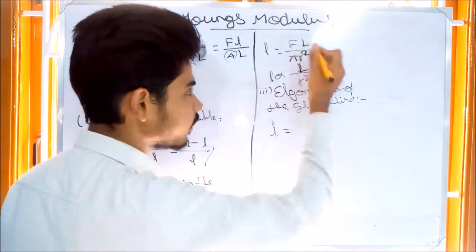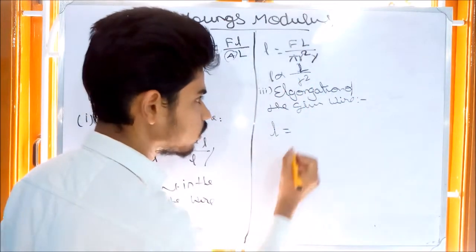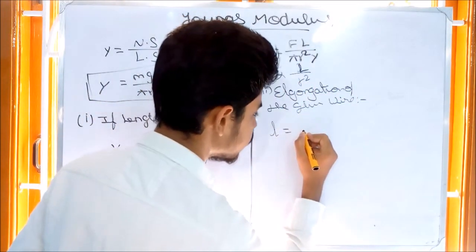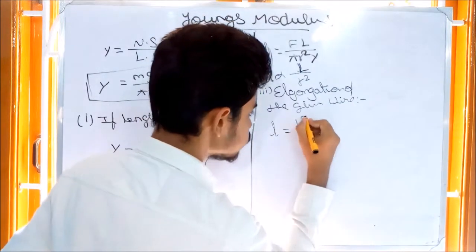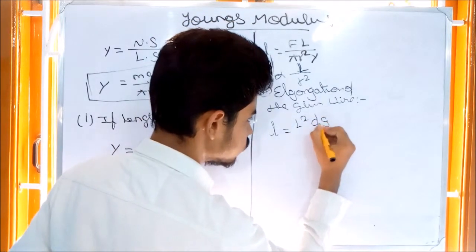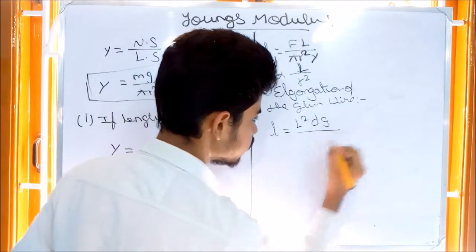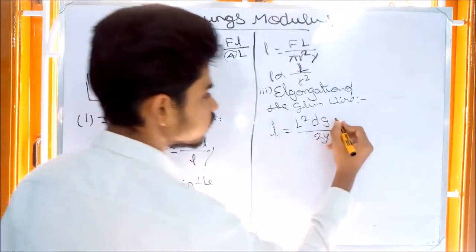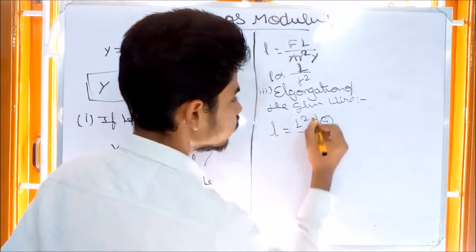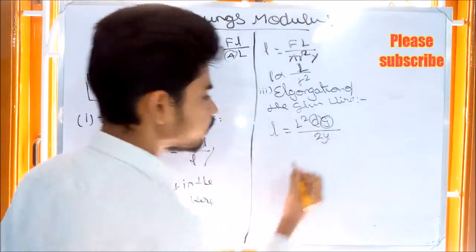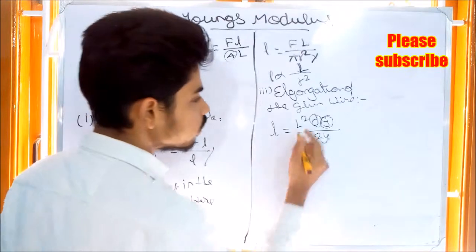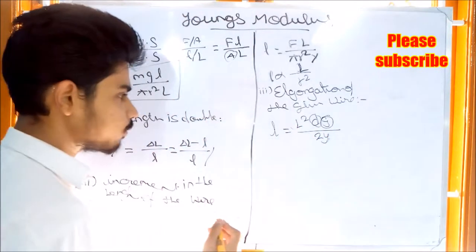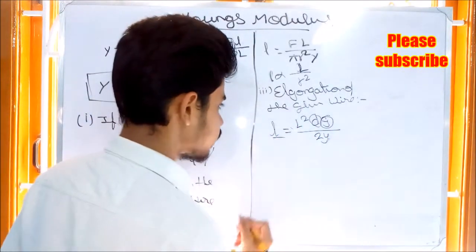Using the elongation formula, elongation equals L squared times D times G divided by 2Y, where G is gravity, D is the diameter of the rod or material, and L is the length of the material.